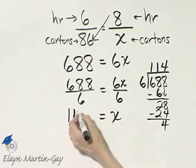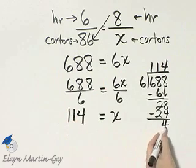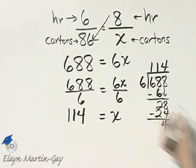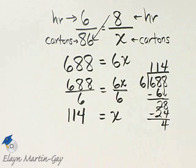So what is my result? It would be 114. And then I have 4 over 6. If you don't mind, I'm going to go ahead and simplify that.